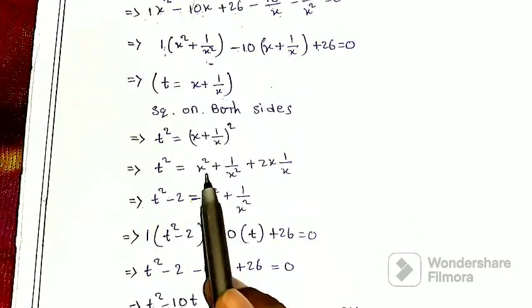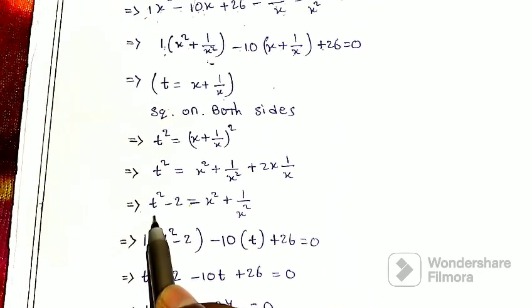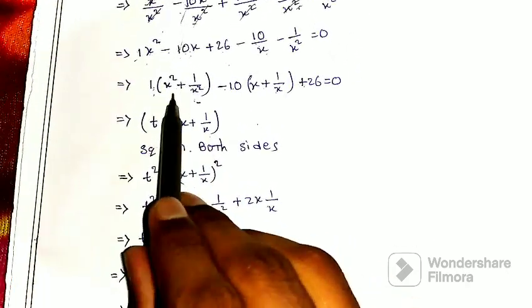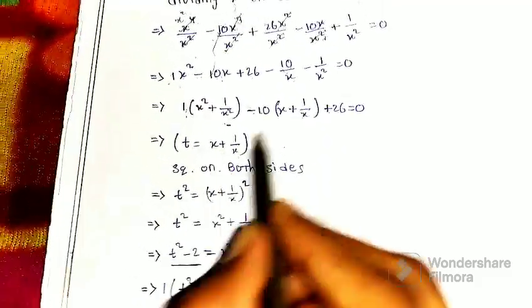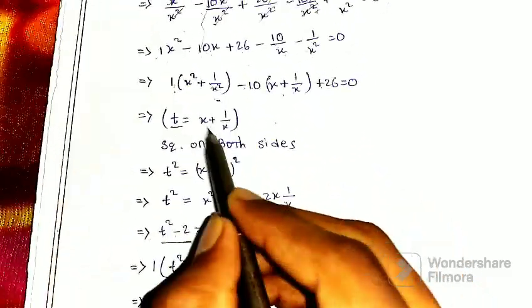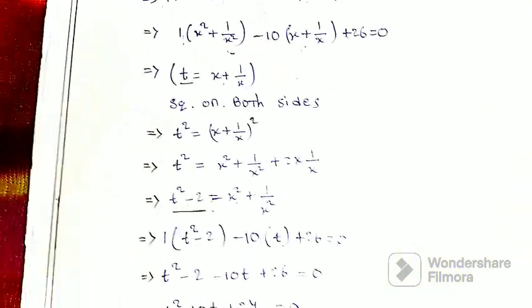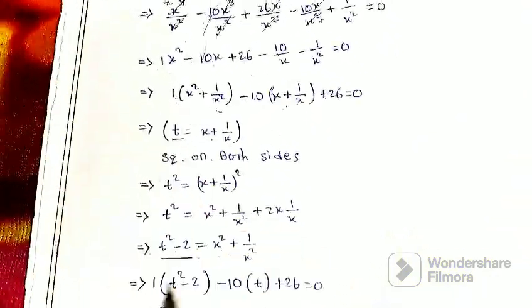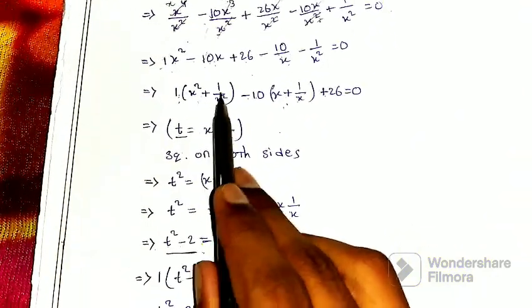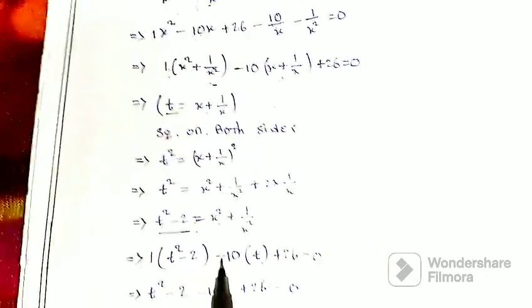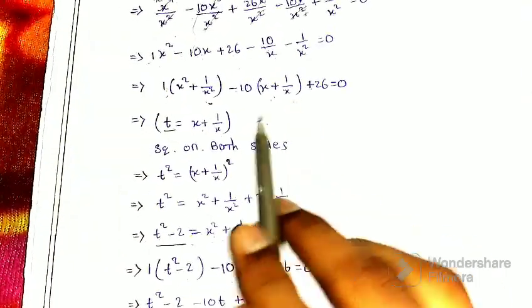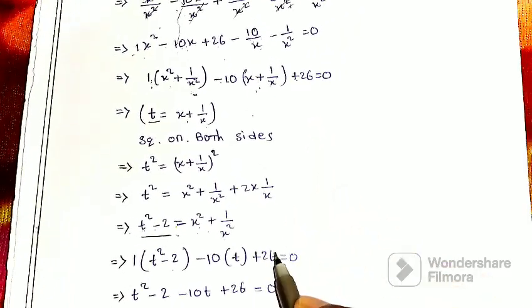Therefore t² minus 2 is equal to x² plus 1/x². Now substituting back into the equation: 1 times (x² + 1/x²) is t² minus 2, minus 10 times (x + 1/x) is minus 10t, plus 26 is equal to 0. So the equation becomes t² minus 2 minus 10t plus 26 equals 0.